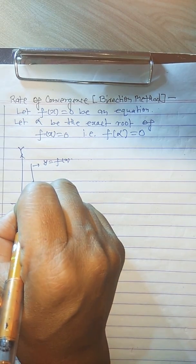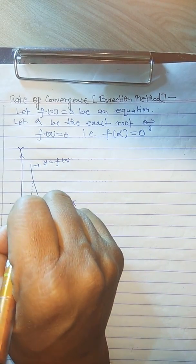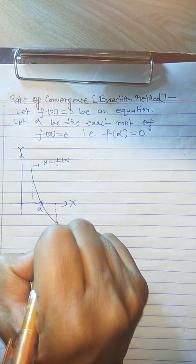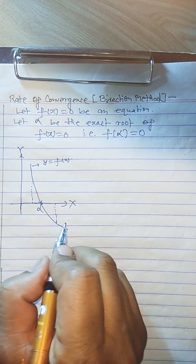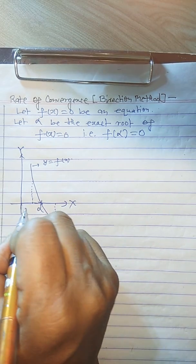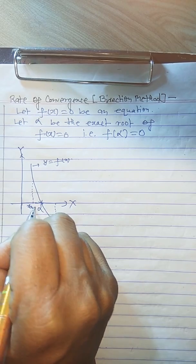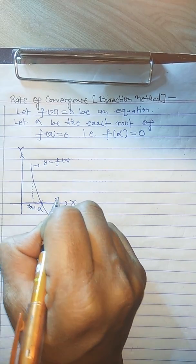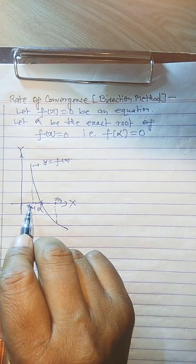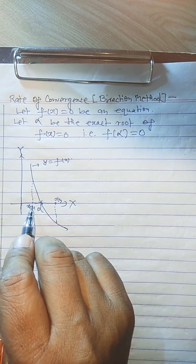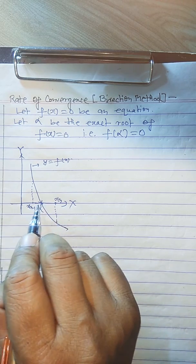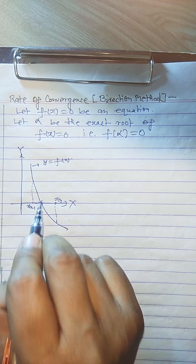By the intermediate value property, first we locate the position of the root. Suppose here we have this point x_{n-1} and this point x_n. The root lies between x_{n-1} and x_n, and this is the exact root alpha.